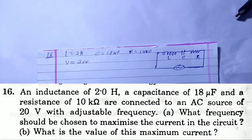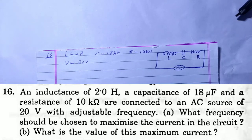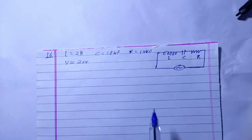HC Verma solution, Chapter 39 Alternating Current, Question 16. An inductance of 2 henry, capacitance of 18 microfarad, and a resistance of 10 kilo ohm are connected to an AC source of 20 volt with adjustable frequency. What frequency should be chosen to maximize the current in the circuit? Second, what is the value of maximum current?